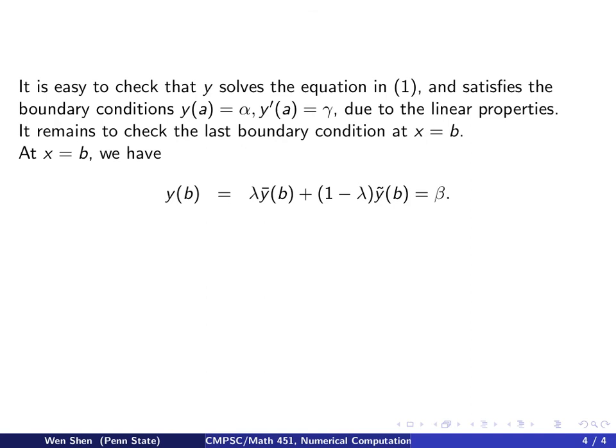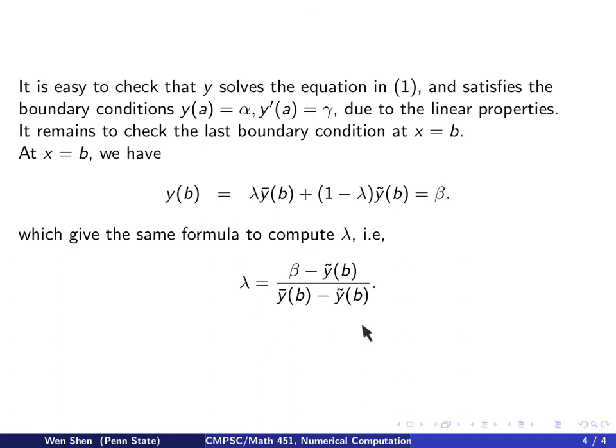So at x equal to b, we have this condition, yb must equal to beta, and plug in expression for yb. We get that. And that's an equation containing lambda as unknown. We can solve. And this gives us actually the same expression on how to solve for lambda. Just a simple computation will give you this.